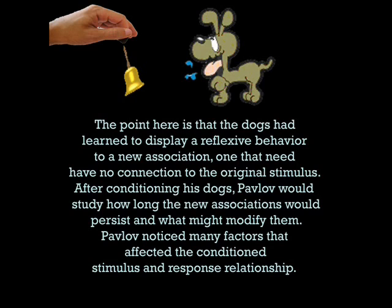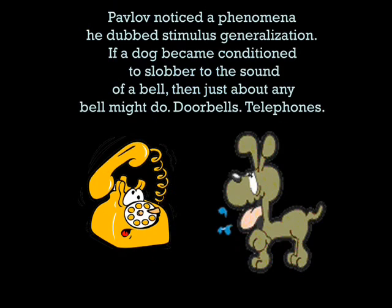Pavlov noticed many factors that affected the conditioned stimulus and response relationship. He dubbed one such phenomenon stimulus generalization: if a dog became conditioned to slobber at the sound of a bell, then just about any bell might do, such as doorbells and telephones.